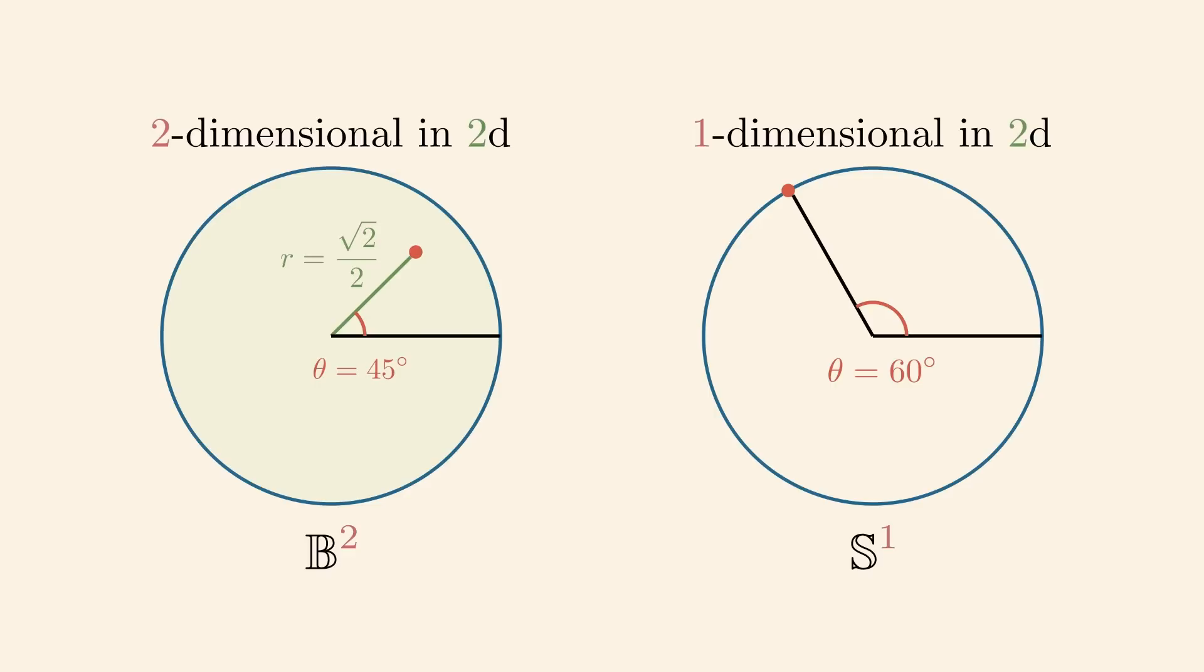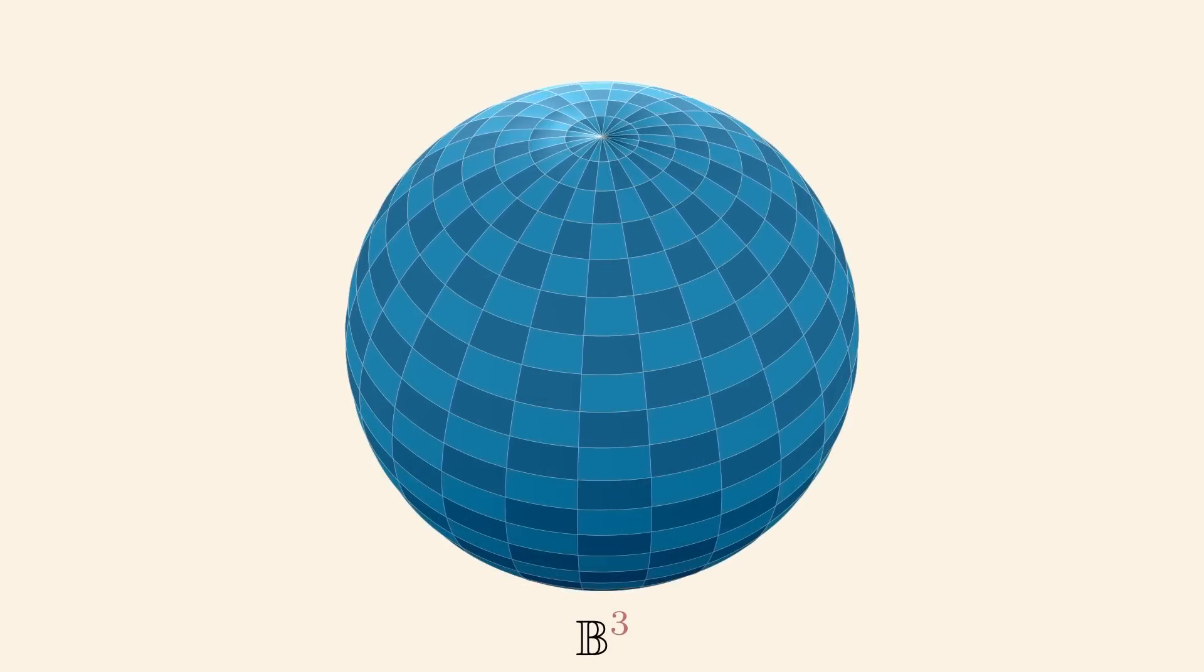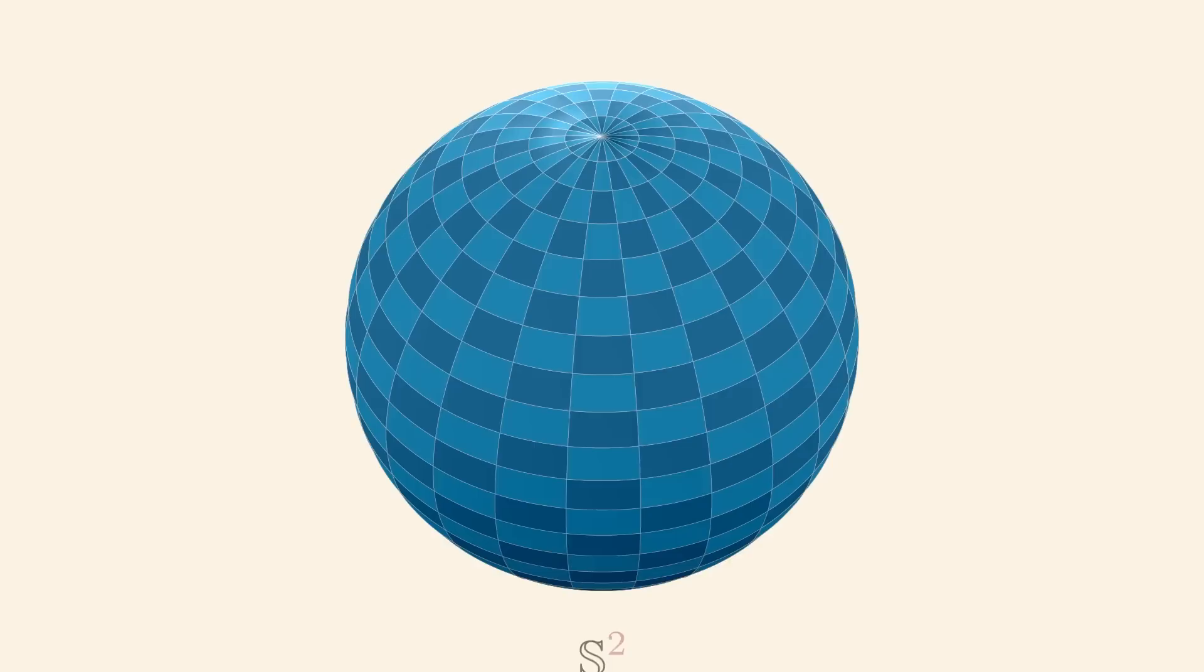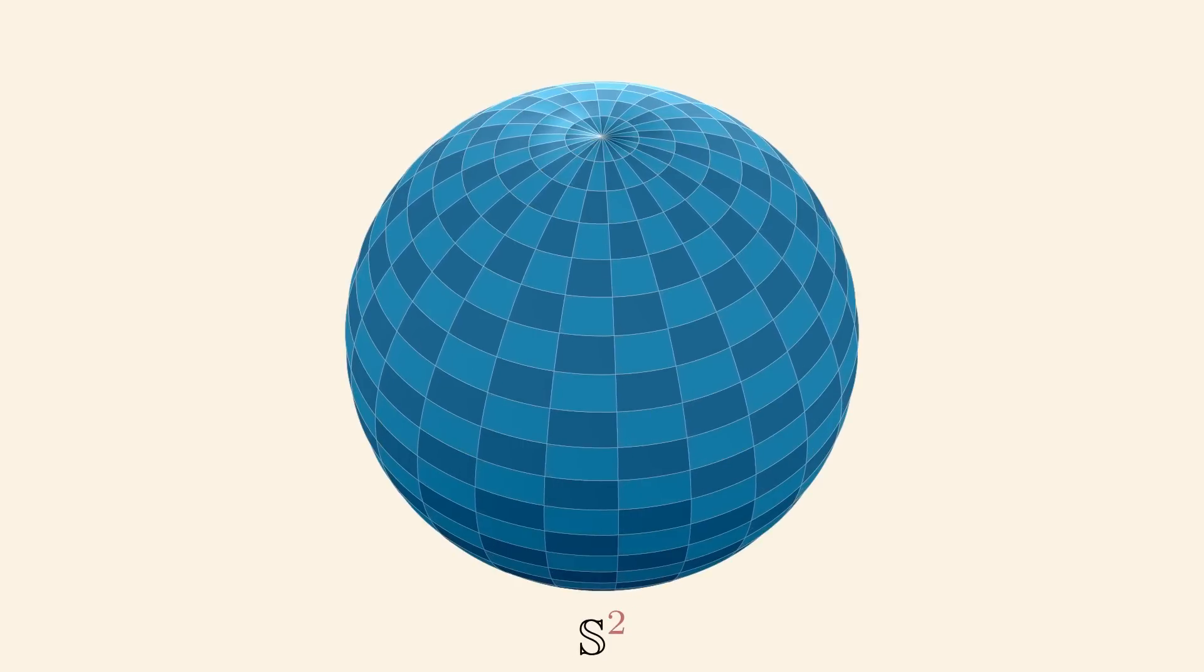Take your time to ensure these definitions do make sense for you. They're quite confusing. One dimension higher up, you get the three-ball, which is a filled sphere in normal terms. Its boundary is the two-sphere. Remember, you only have two degrees of freedom on it, latitude and longitude.